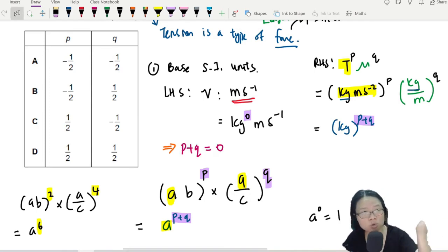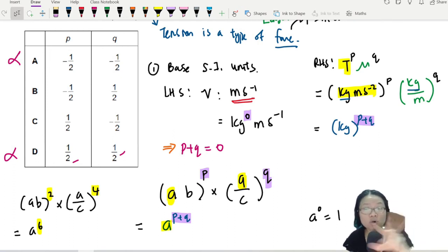Now you look at this MCQ. Which P and Q is 0? A is wrong. Negative half, negative half. Where got 0? Half, half. Where got 0? Wrong. You are left with 2. It's either P is negative half or Q is negative half. But don't forget, we got another term we haven't checked yet.